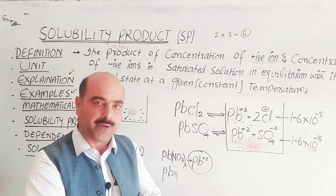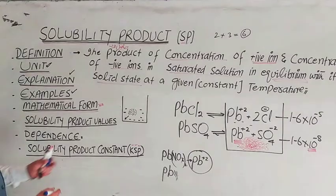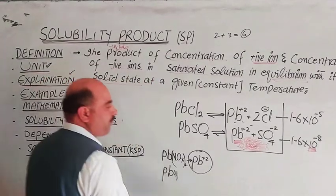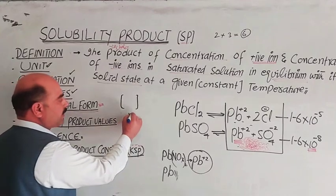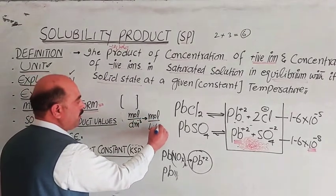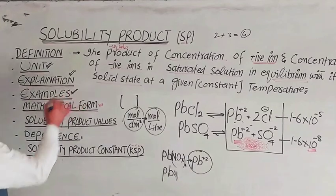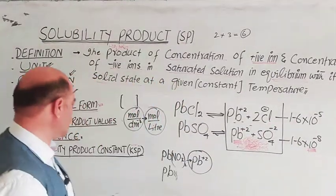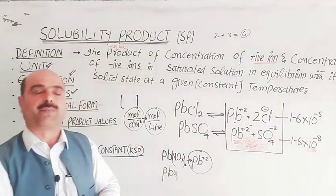Regarding units: since K_SP involves concentrations, and the unit of concentration is mole per decimetre cube (mol/dm³) or mole per litre (mol/L), the unit of K_SP will be mol/L or mol/dm³, depending on the powers involved in the expression.